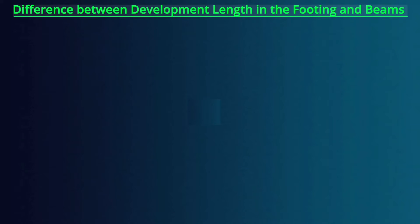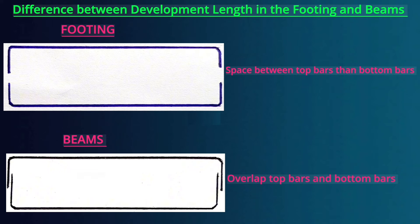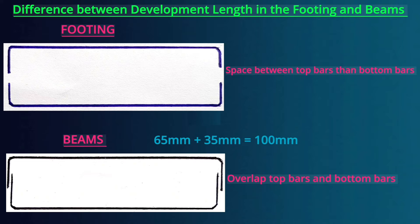The difference in development length for steel bars in the footing versus the beam is that in the footing, there should be space between top bars and bottom bars, whereas in the beam, top bars should overlap with the bottom bars with no space between them. That's why we add an extra 35 millimeters on top of the 65mm development length to make the total 100 millimeters. Therefore, the development length on both sides is 100 millimeters each.